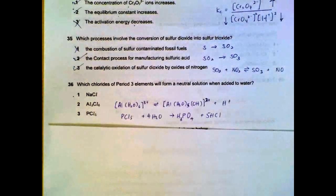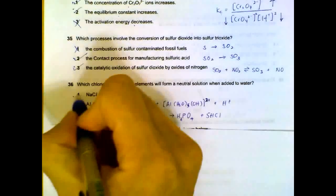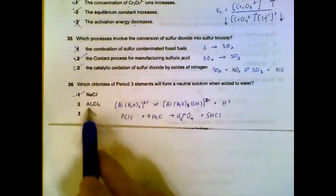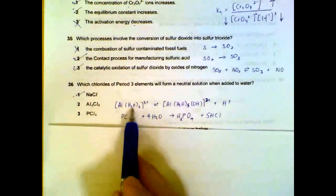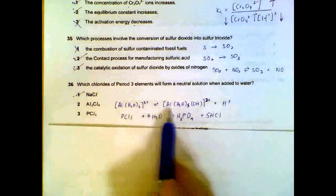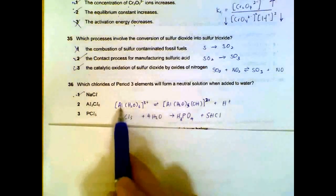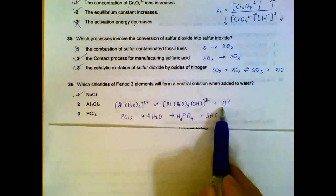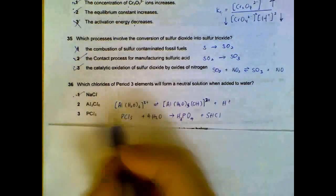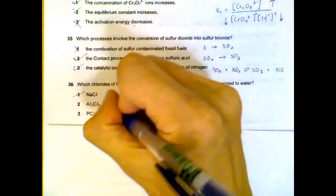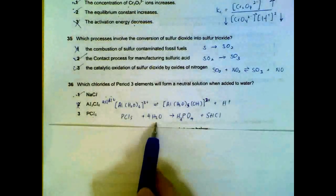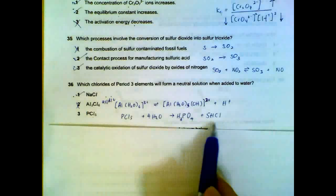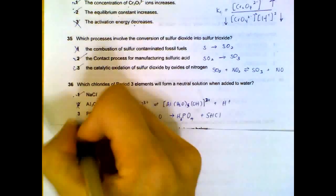Question 36. Which one will give a neutral solution? Your sodium chloride is neutral. Your aluminum chloride will form aluminum 3+ with water. And then because of the high charge density, it will actually release H+, so this is actually acidic. PCl5 in water will form phosphoric acid and hydrochloric acid also, so it's acidic also.